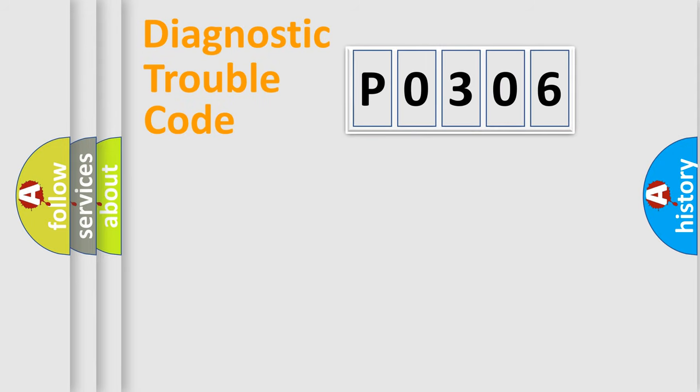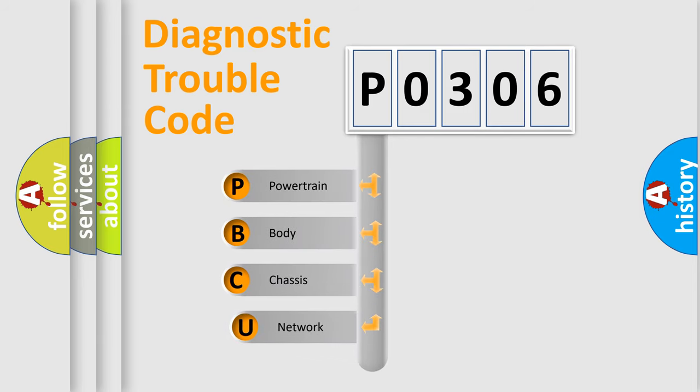First, let's look at the history of diagnostic fault code composition according to the OBD2 protocol, which is unified for all automakers since 2000. We divide the electric system of automobile into four basic units.